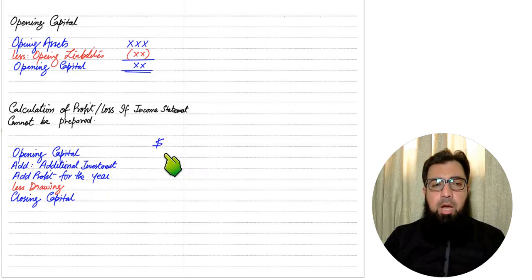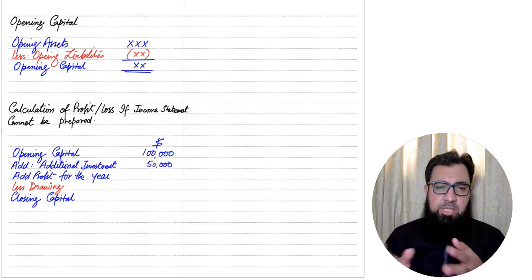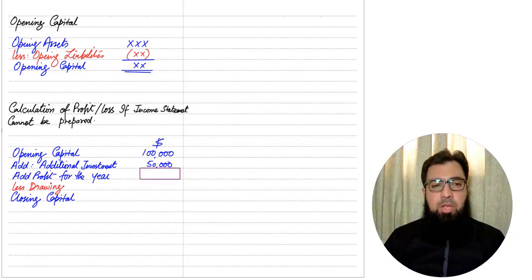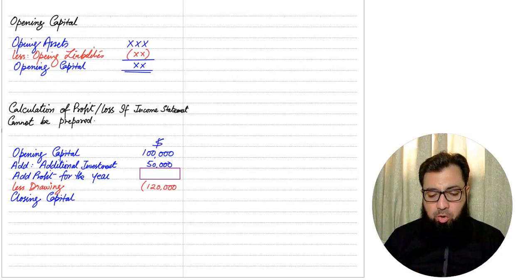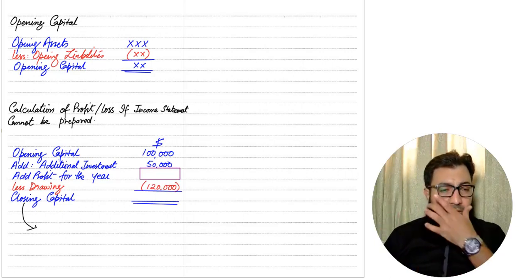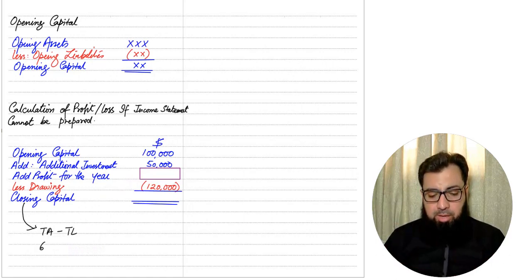The opening capital would be given in the question, or we can calculate it by deducting opening liabilities from opening assets. For example, suppose opening capital is 100,000. In the question it is mentioned that further capital of 50,000 was invested during the year. We need to calculate profit — that is unknown. Drawings in cash or goods form total 120,000. The closing capital is also unknown; to find it, we look at year-end total assets and total liabilities and deduct liabilities from assets.